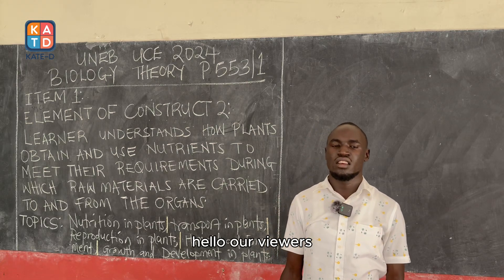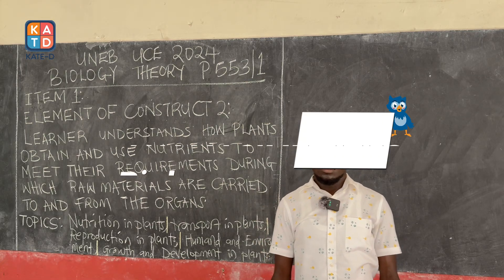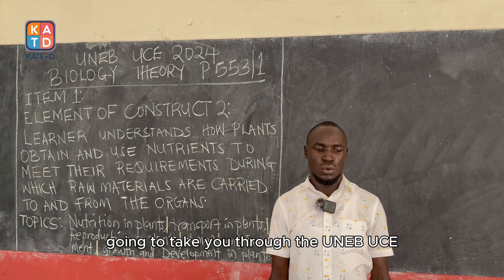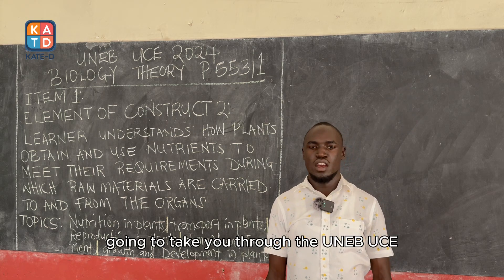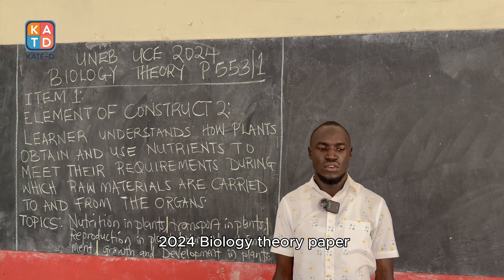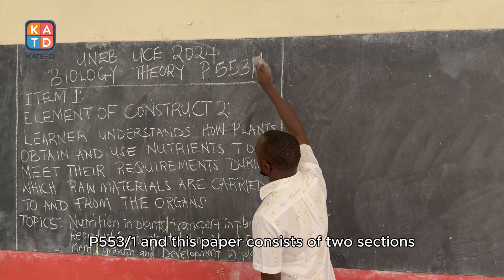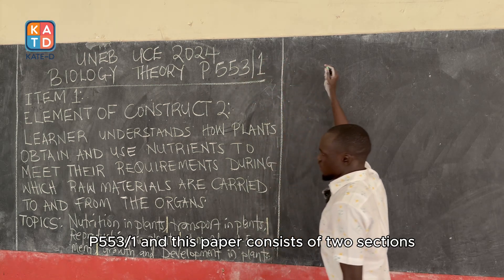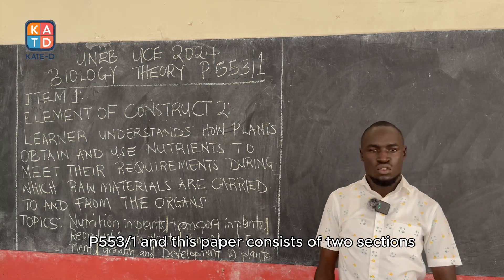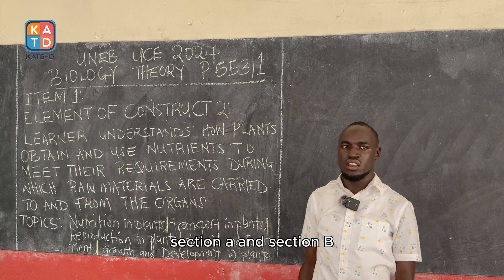Hello, our viewers. This is Teacher Anamasime Titus, going to take you through the UNEB UCE 2024 Biology paper 53/1. This paper consists of two sections: section A and section B.